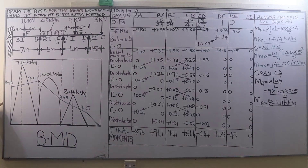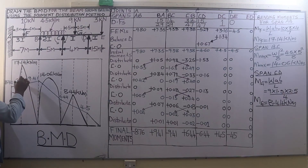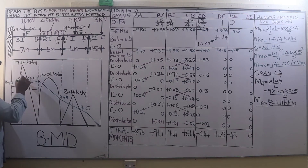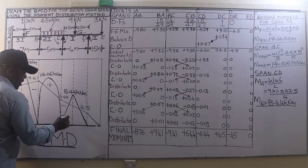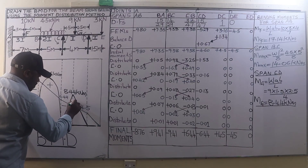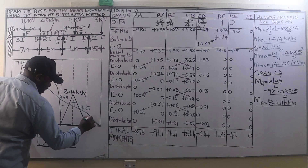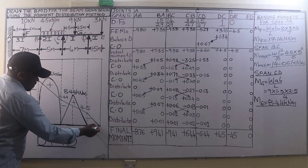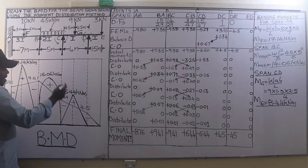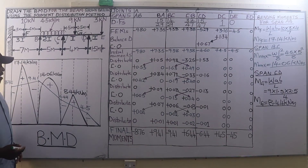This is now our complete bending moment diagram. The negative bending moments are on one side and the positive on the other — positive, negative, positive, negative, positive, negative. Finally, we shade off the outline of the bending moment diagram to make it clear, smart, and visible.